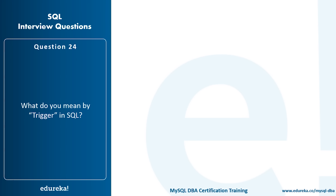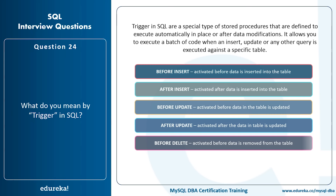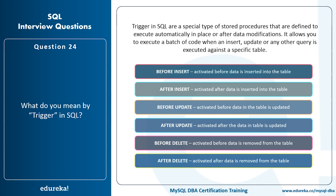What do you mean by a trigger in SQL? Triggers are a special type of stored procedures defined to execute automatically in place of or after data modifications. They allow you to execute a batch of code when an INSERT, UPDATE, or other query is executed against a specific table. There are six types of triggers: BEFORE INSERT, AFTER INSERT, BEFORE UPDATE, AFTER UPDATE, BEFORE DELETE, and AFTER DELETE.